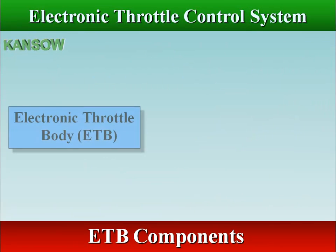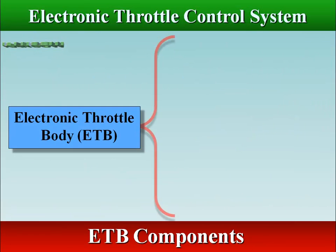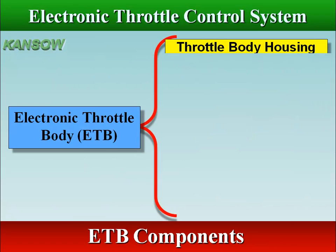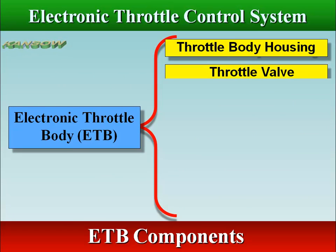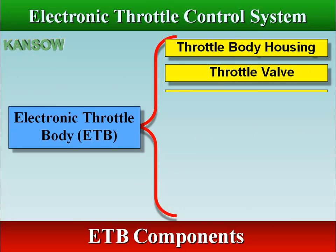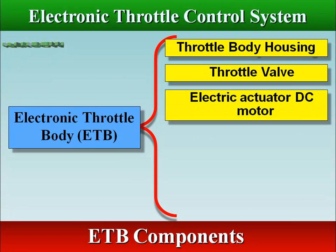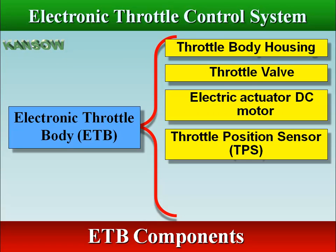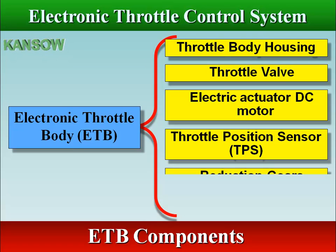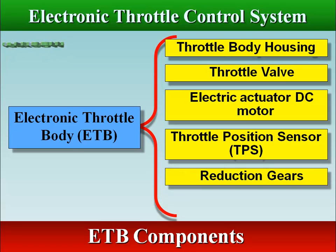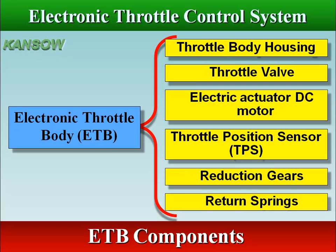The electronic throttle body contains throttle body housing, throttle valve, throttle actuator control motor, throttle position sensor (TPS), reduction gears, and return springs.